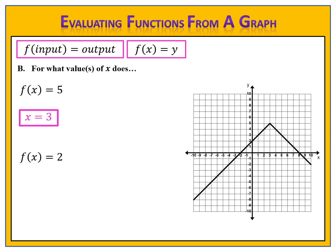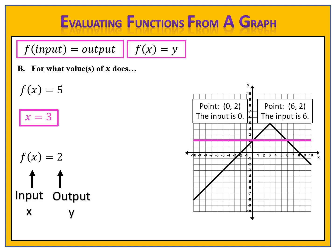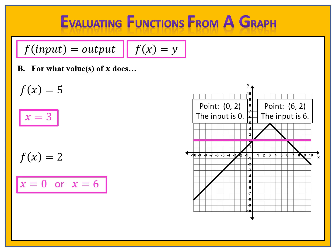For f of x equals 2: f of input equals output — the input is x and the output is 2. We draw our line across the graph at 2 and notice that there are two places where the graph intersects this line: at the point (0, 2) and at the point (6, 2). Therefore, the input 0 produces the output 2, so f of 0 equals 2, and the input 6 also produces the output 2, so f of 6 equals 2. There are two separate values of x — x equals 0 or x equals 6.